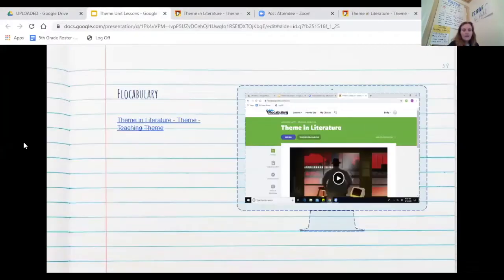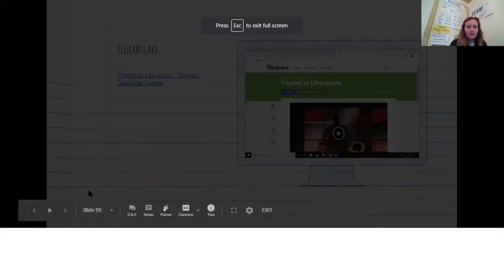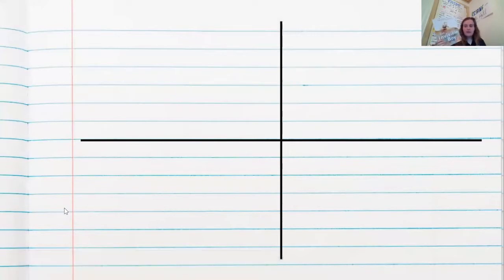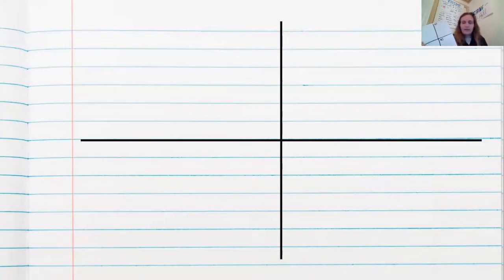That was just a fun way to review our terms that we've been working on. Today we're going to be reading a story called The Invisible Boy. You might have read this story before, but we're going to read it again today. What you need right now is a piece of paper in front of you. We are setting it up the same way we set it up on Tuesday — go ahead, fold your paper in half, and then fold it in half again.